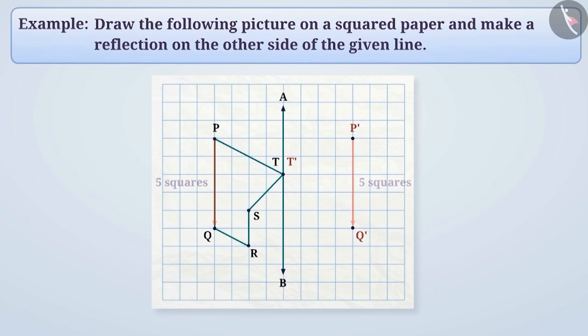Similarly, we will mark the reflection of R as R prime and the reflection of S as S prime. By connecting them in sequence, we will get P prime, Q prime, R prime, S prime, T prime.